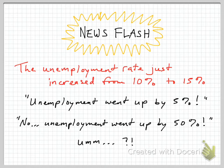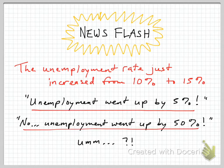So here's a little news flash. Suppose we find that the unemployment rate in some jurisdiction has increased from 10% to 15%. So what can we say about that? Well, some people might say unemployment went up by 5%. But somebody else might say, wait a minute, unemployment just went up by 50% from 10% to 15%. Well, which is it, and how can we make sure we use terminology that keeps those two things straight?